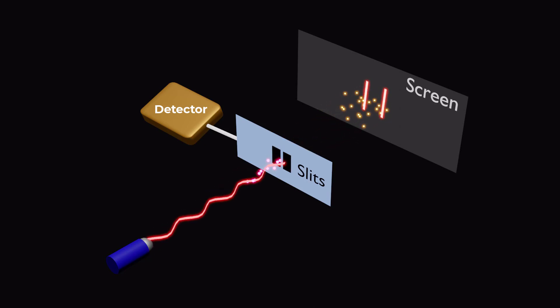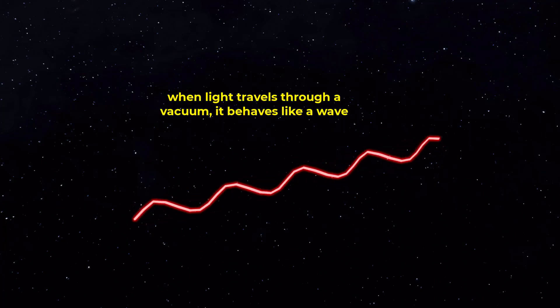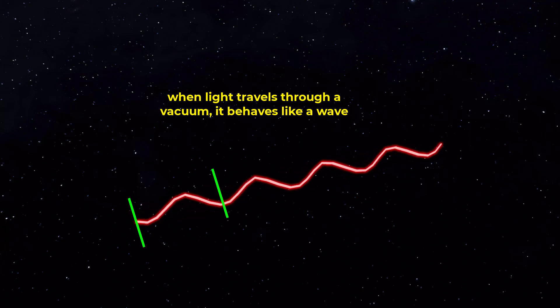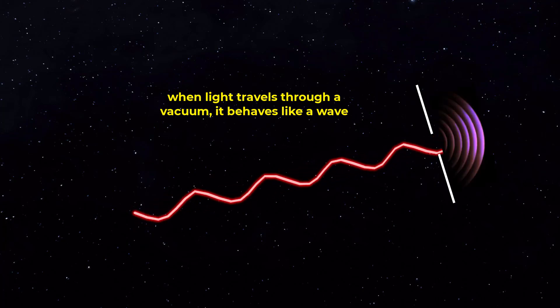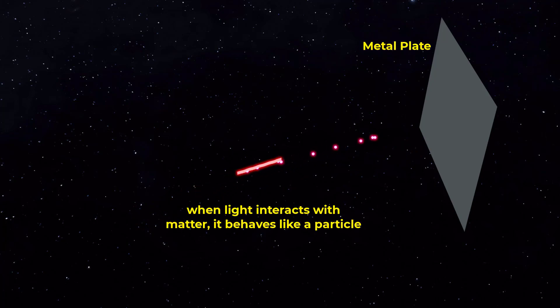There are many examples of the dual nature of light. For example, when light travels through a vacuum, it behaves like a wave. It has a wavelength and a frequency, and it can interfere and diffract. However, when light interacts with matter, it behaves like a particle.